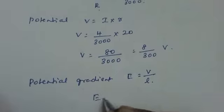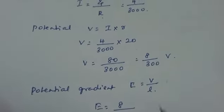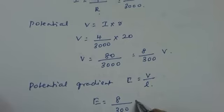E equals, what is the value of V? V is 8 by 300. What is the value of L? L is 4.